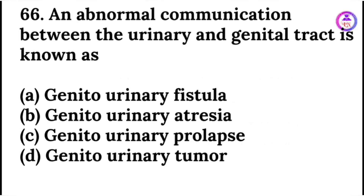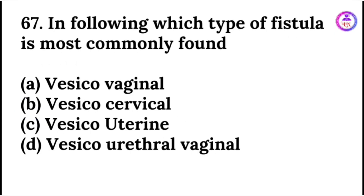An abnormal communication between the urinary and genital tract is known as a genitourinary fistula. The most commonly found fistula is the vesicovaginal fistula.